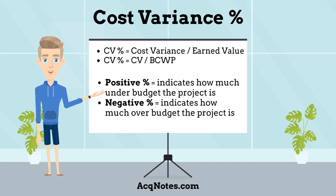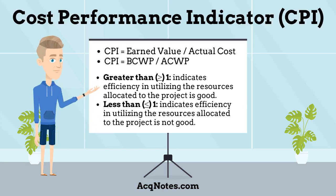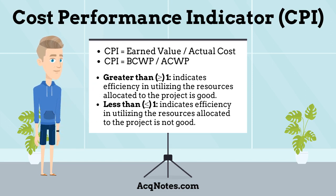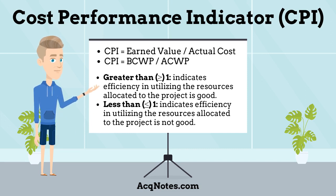A negative percentage indicates how much over budget the project is. The third cost variance type is Cost Performance Indicator, or CPI. CPI can be calculated as: CPI equals Earned Value divided by Actual Cost, or CPI equals Budgeted Cost of Work Performed divided by Actual Cost of Work Performed. CPI is an index showing the efficiency of the utilization of the resources on the project. A CPI greater than 1 indicates good efficiency; a CPI less than 1 indicates efficiency is not good.